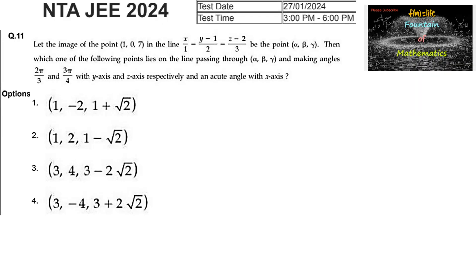Let the image of the point (1, 0, 7) in the line x/1 = (y−1)/2 = (z−3)/3 be the point (α, β, γ).